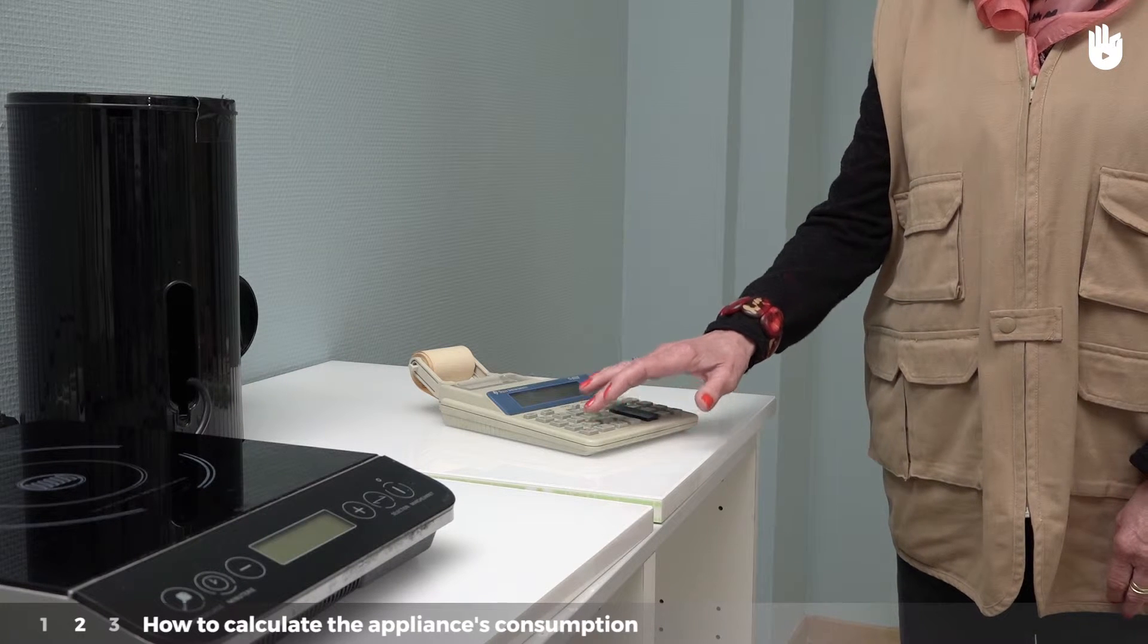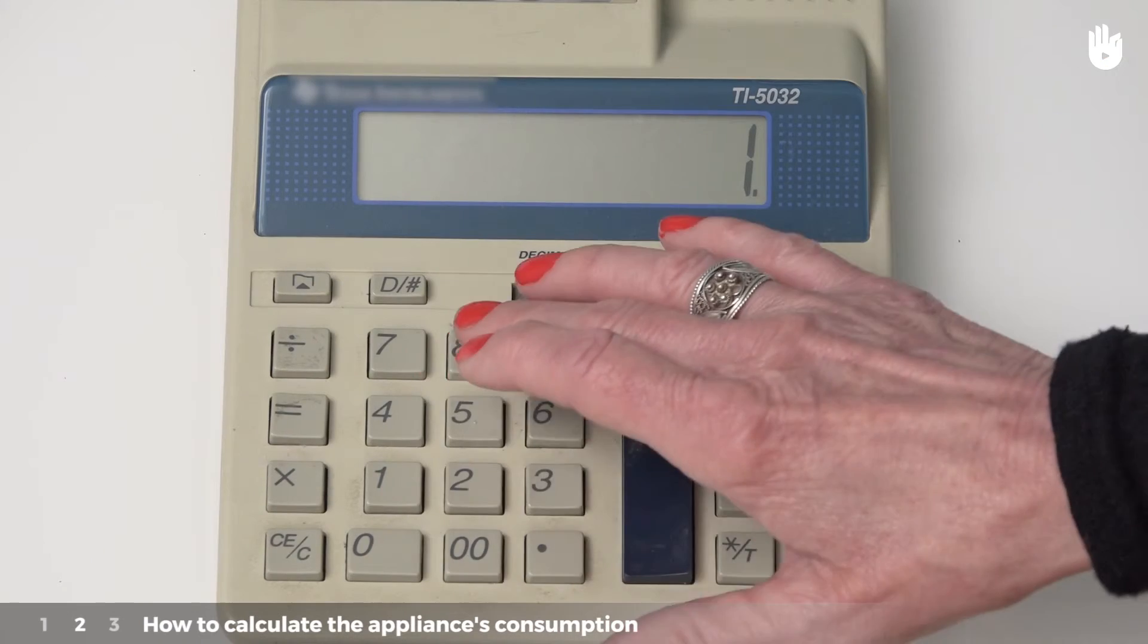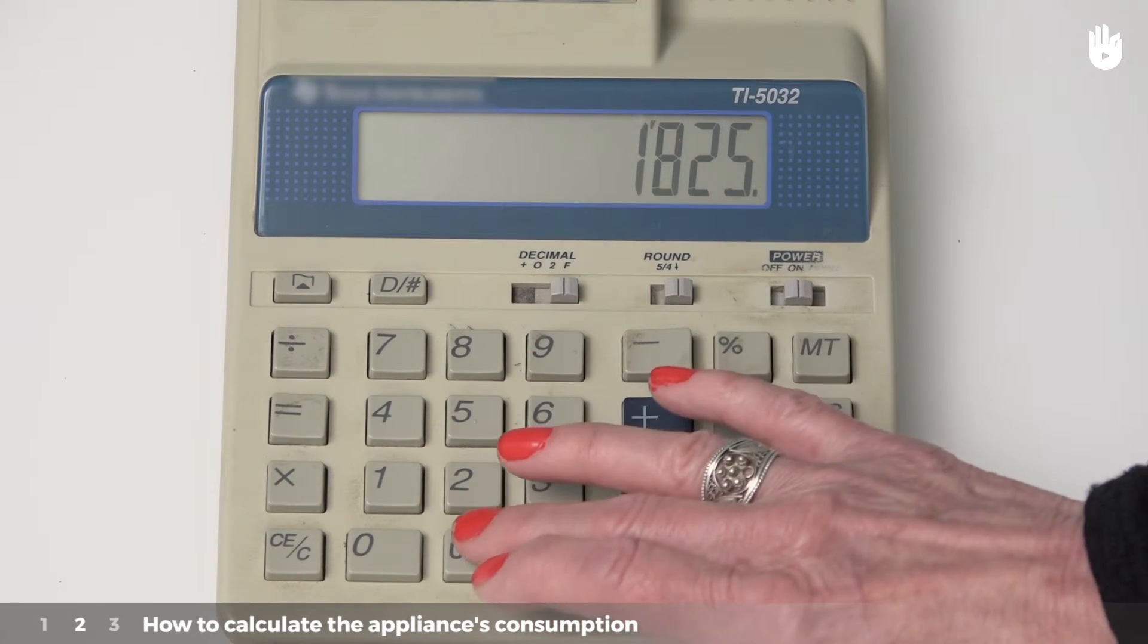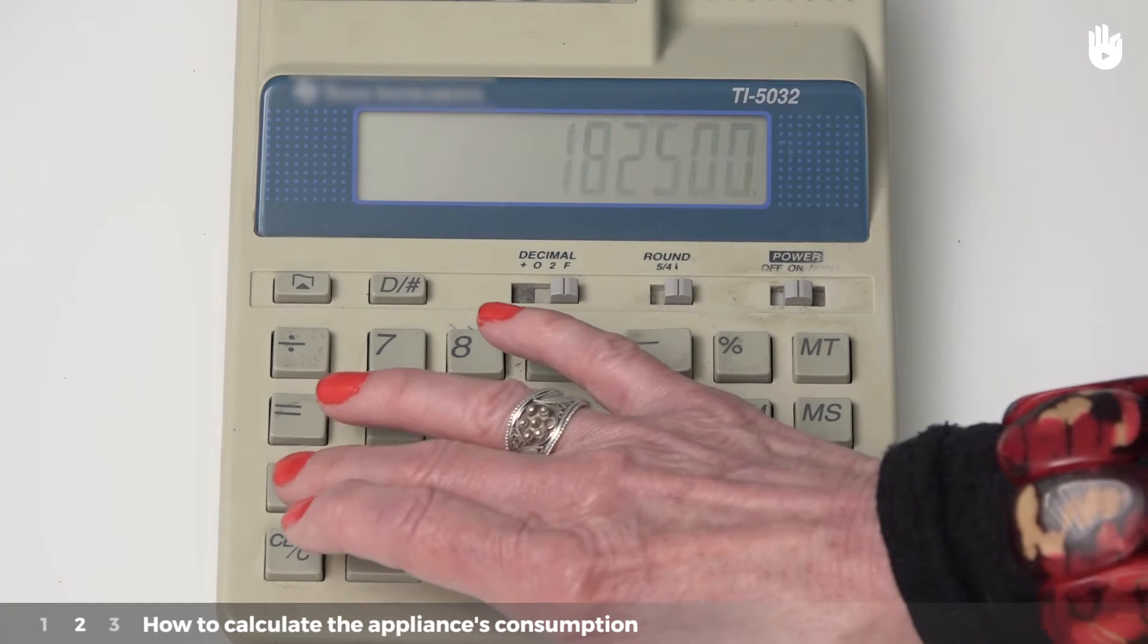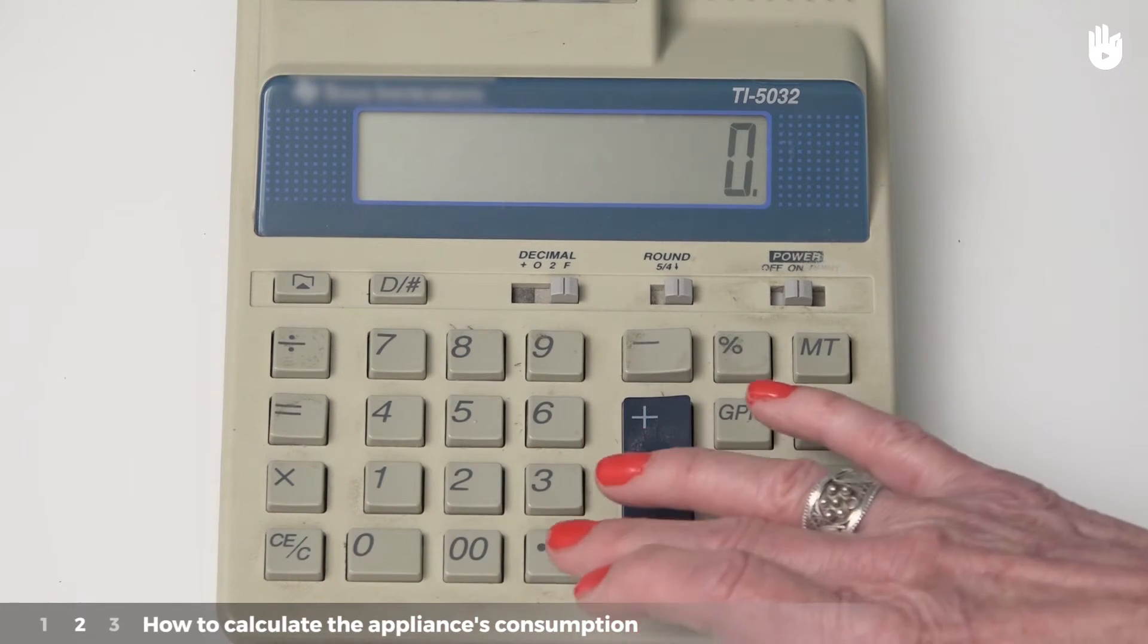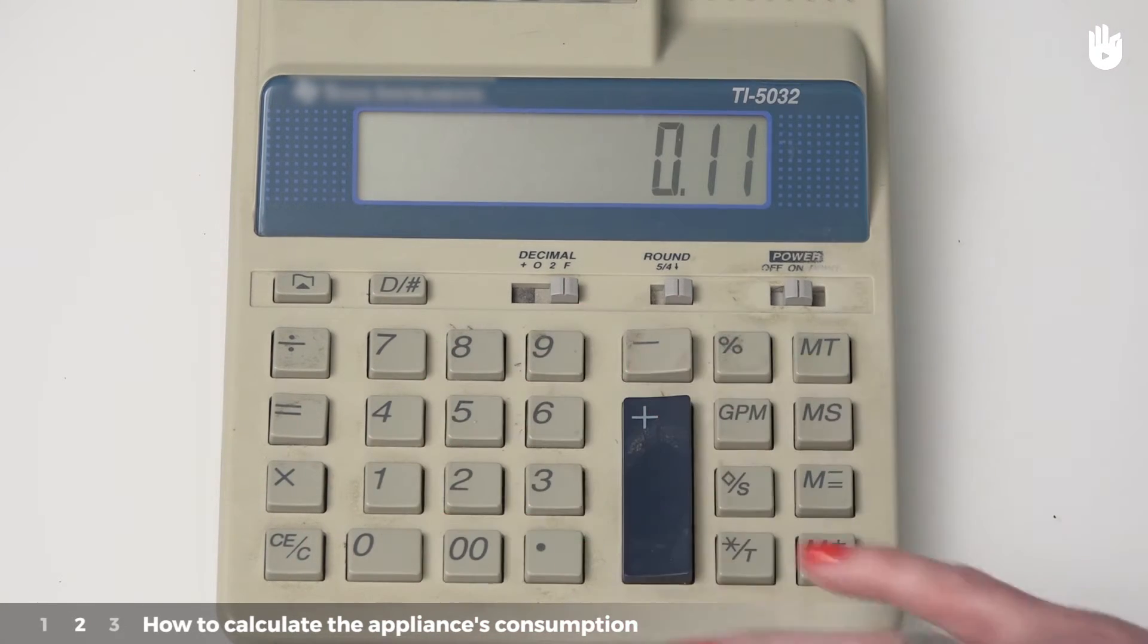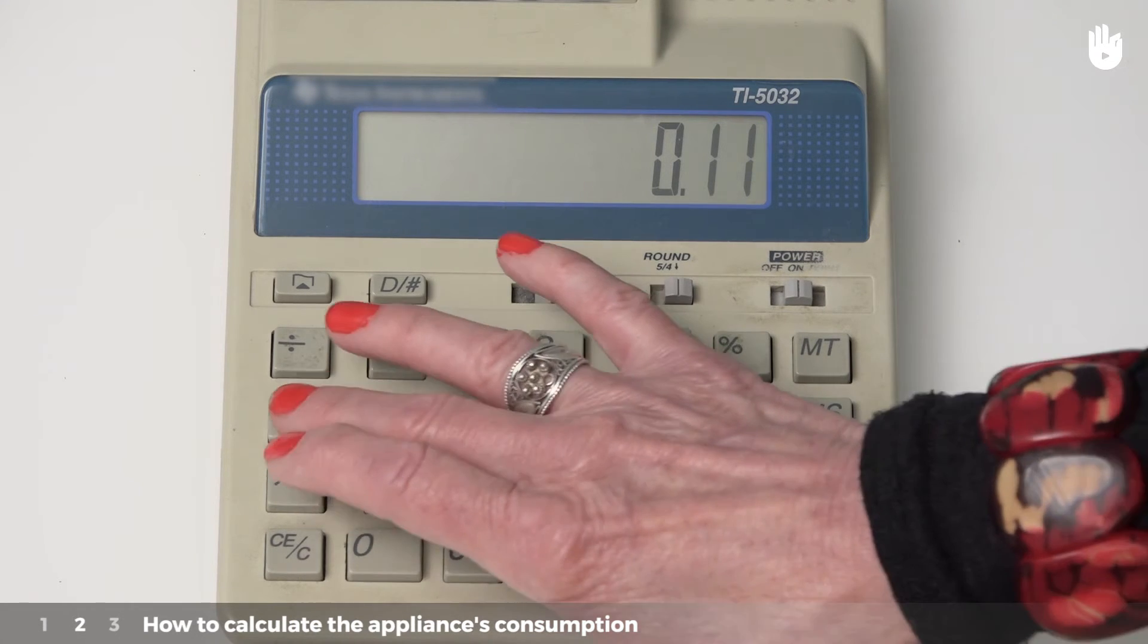To find out the cost of consumption for this appliance, multiply the price of the kilowatt hour. If the kilowatt hour costs 0.11 euros after tax, the invoice will be in the amount of 182.5 times 0.11, which equals 20 euros per year.